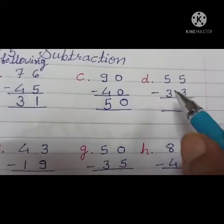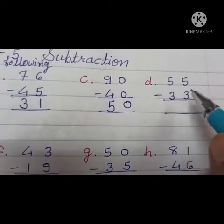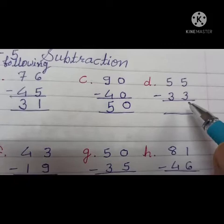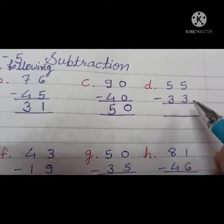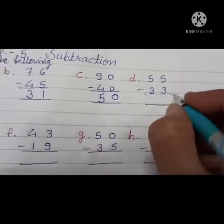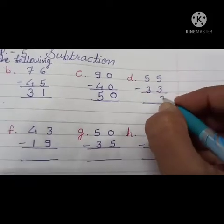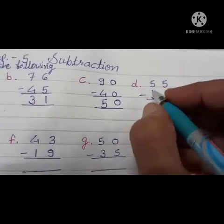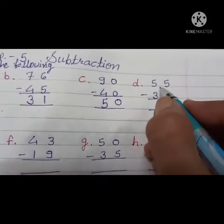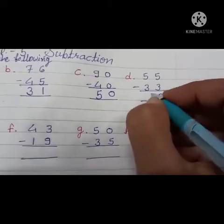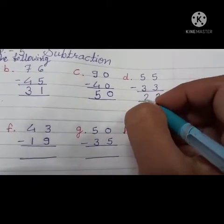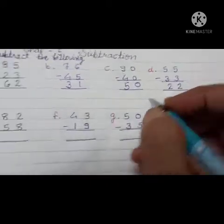Now D: 55 minus 3. Ones: 5 minus 3 equals 2. Then next number, tens: 5 minus 3 equals 2.